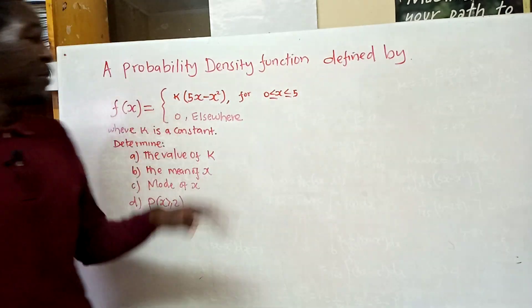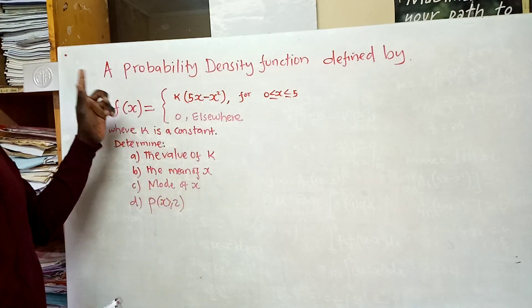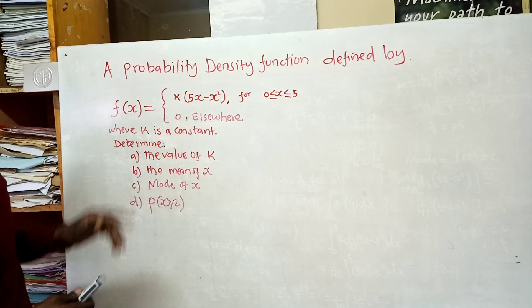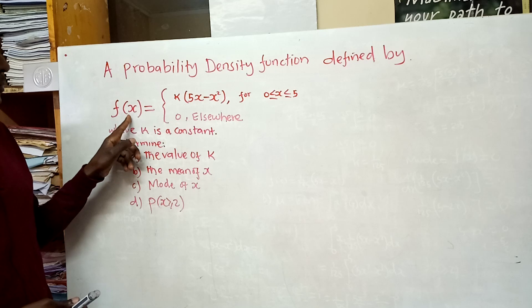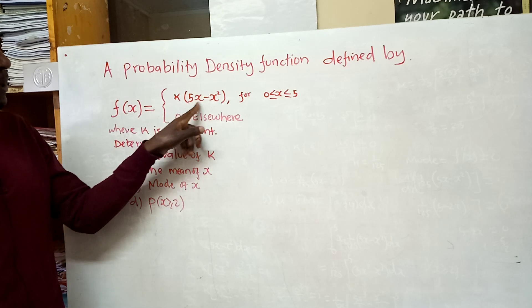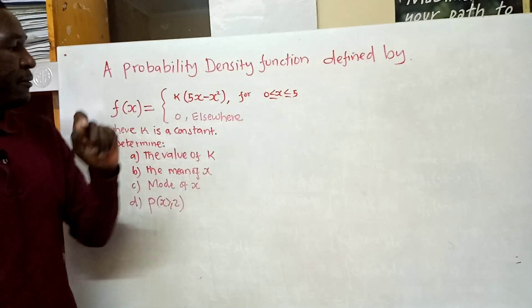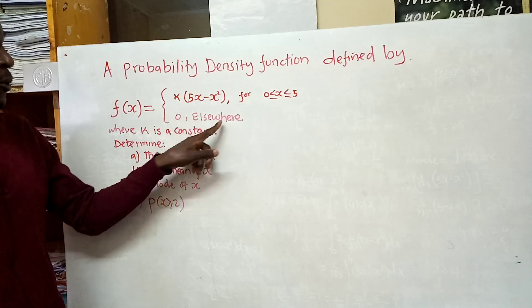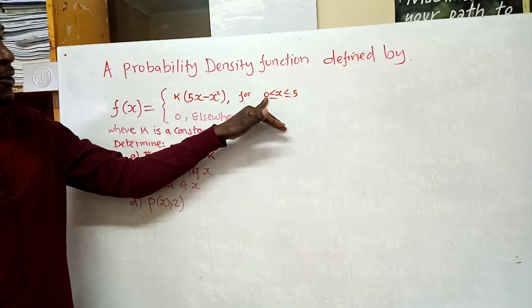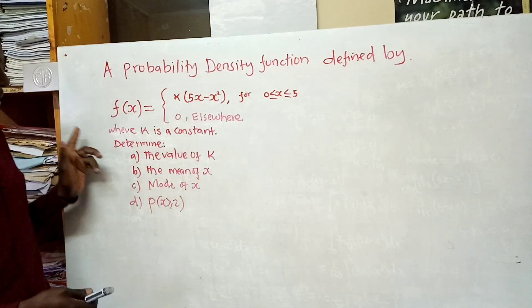Welcome to this lesson. We are going to do a quick question on probability density function. This is a continuous random variable that has a probability density function defined by f(x) = k(5x - x²) for x values between 0 and 5, and that function is 0 elsewhere, meaning it doesn't exist for values less than 0 or greater than 5.